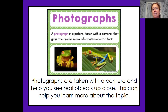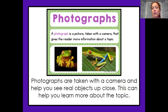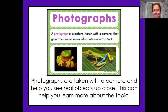Photographs are taken with a camera and can help you see real objects up close. This can help you learn more about the topic. A photograph is a real picture — one that shows you exactly what the story is talking about. It is helpful to the reader because if they have not seen what the author is writing about before, it will give them a better understanding of the story.